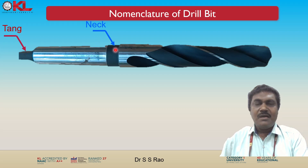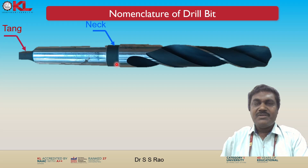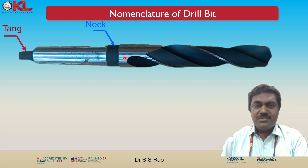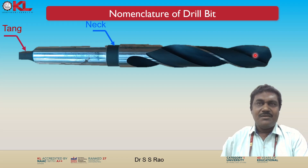Next is the neck. In between these two portions there is a small slot called the neck. The neck is the slender intermediate section between the shank and the body portion of the drill bit. It provides a transition between the thicker shank and the main cutting portion of the drill bit. From this neck onwards, the cutting portion starts.